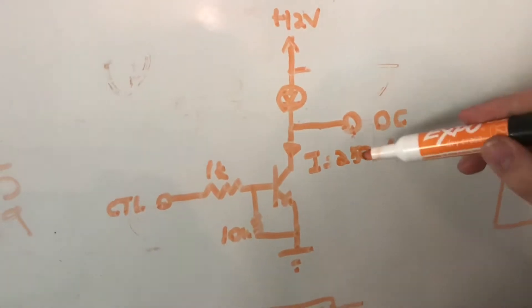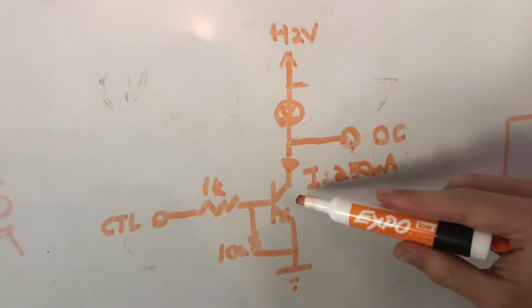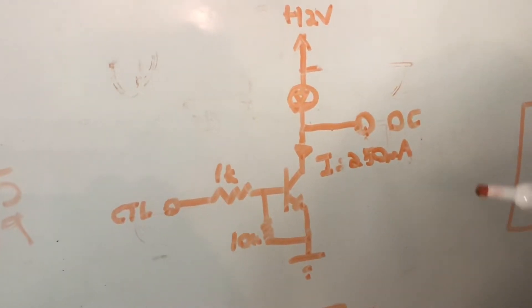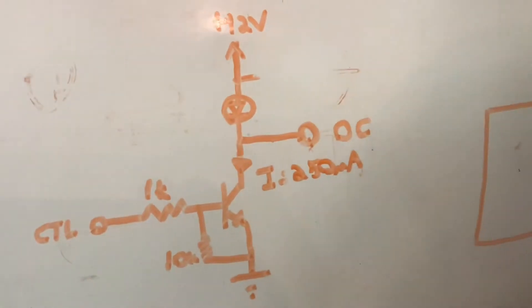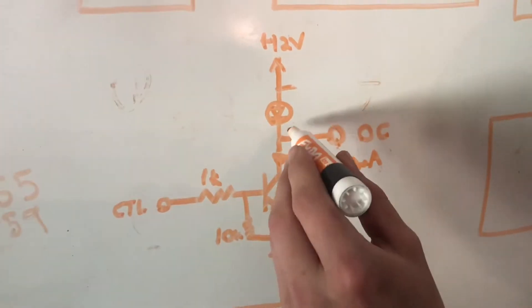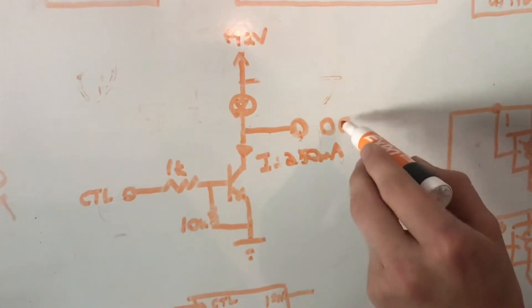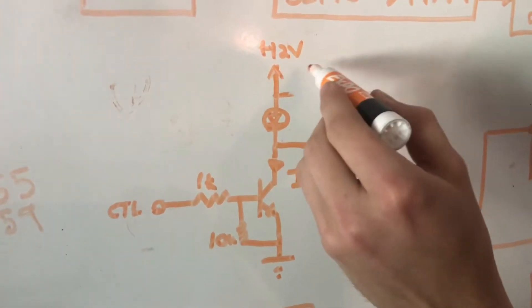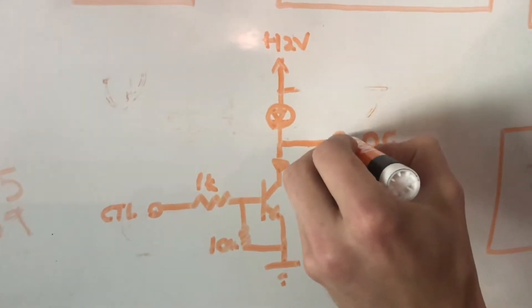So the circuit that's used has at the heart of it a transistor, and it just acts like a switch. The relay is connected between what I've labeled OC, which means open collector, and 12 volts. So the relay coil would be between 12 volts and this.